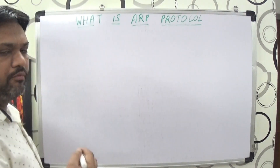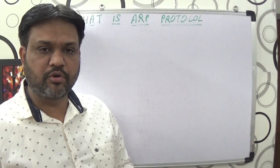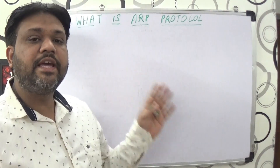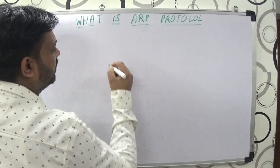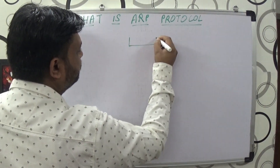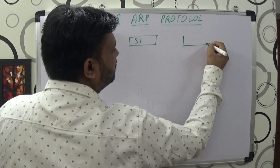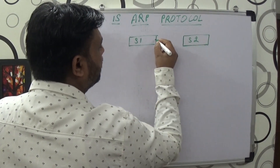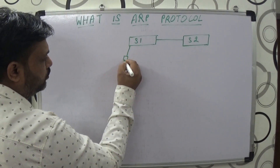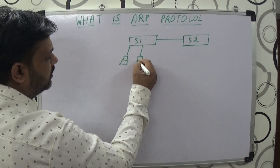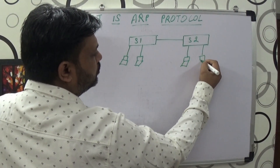First of all we discuss what is ARP protocol, but before understanding ARP protocol we need to know where this ARP protocol is helping us in networking. For example, I'm creating a diagram here. This is switch number one and we have another switch — switch number two — and both switches are connected. We have two computers connected to switch number one and two computers connected to switch number two.